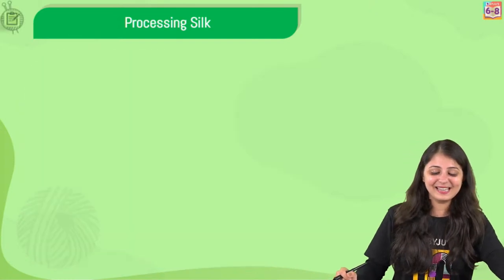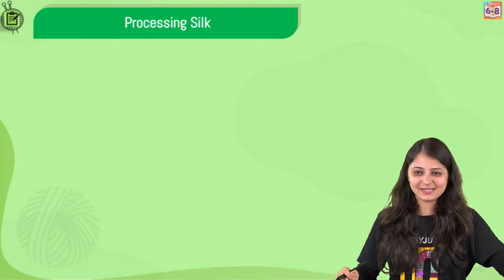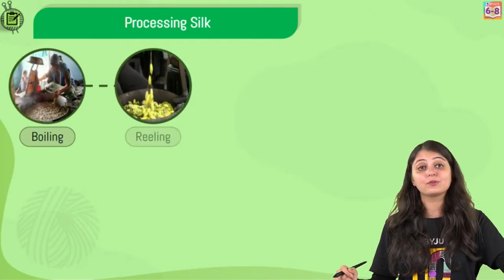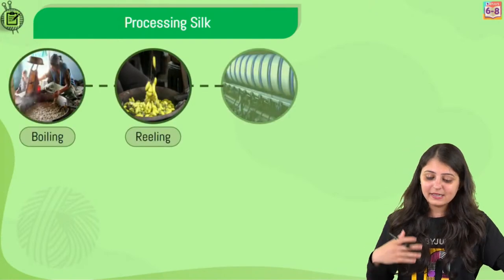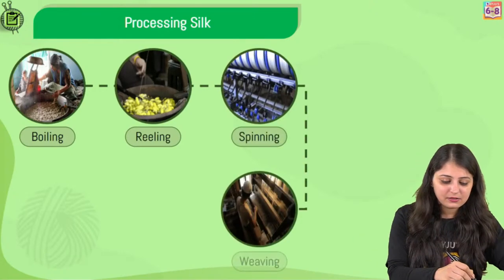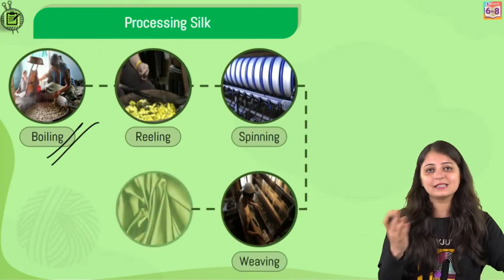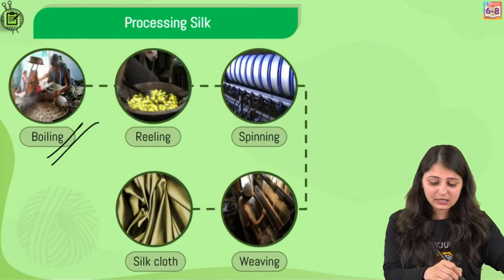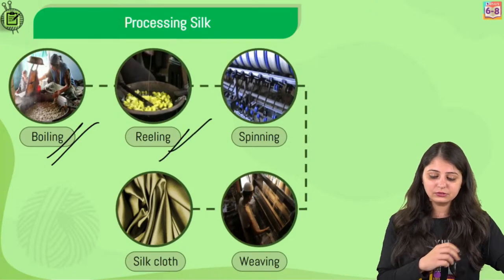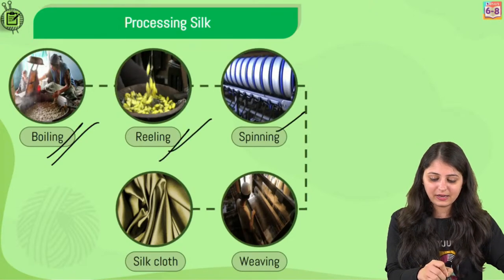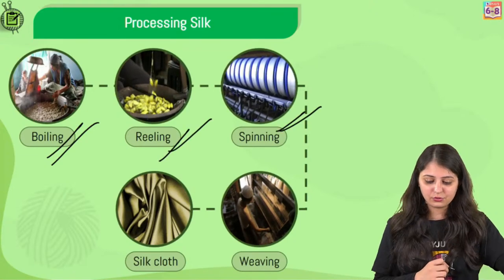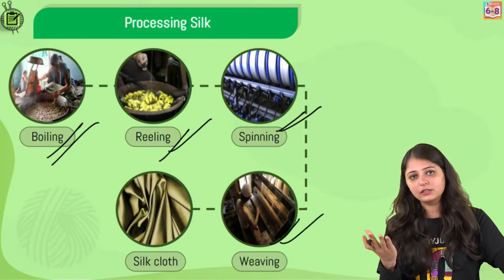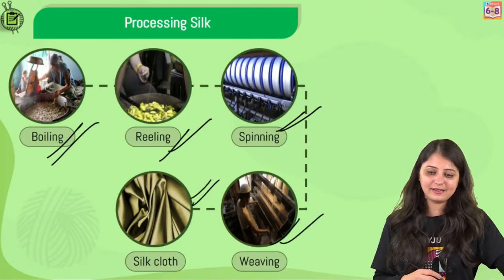As we've discussed, the processing of silk has all these steps: the cocoons are first exposed to heat so that the stickiness reduces, then the threads are taken out from the cocoon, then the silk fibers are converted into yarn, and then they're further woven into fabric.